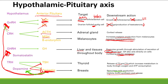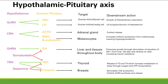Somatostatin — remember the nickname 'somatostopin' — reduces release of all other hormones. In the hypothalamic-pituitary axis it reduces release of growth hormone and TSH. To summarize the regulatory pattern: somatostatin blocks GH and TSH; dopamine blocks TSH and prolactin; TRH activates TSH and prolactin.